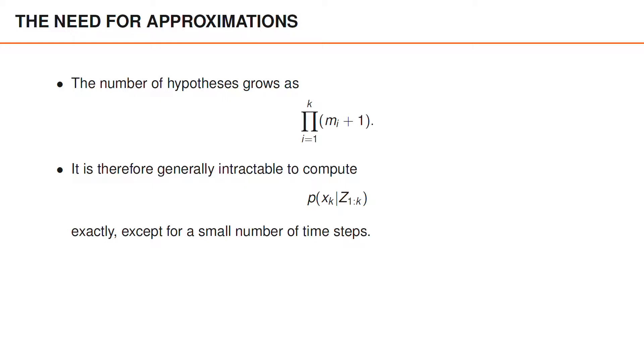The main reason is perhaps that we essentially need to perform one separate Kalman filter update for every hypothesis. But there is also a limit to how many hypotheses we can store in memory, and so on.